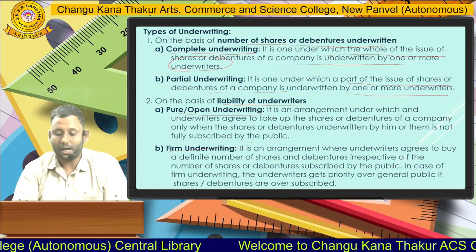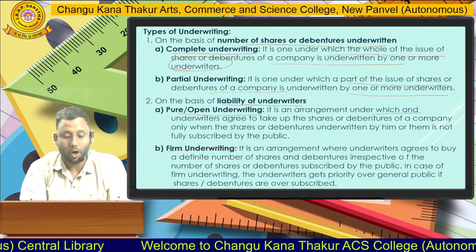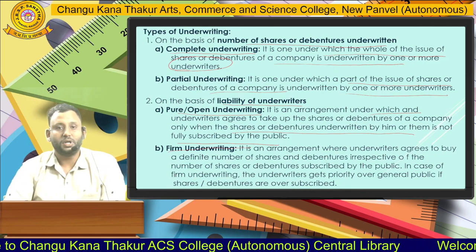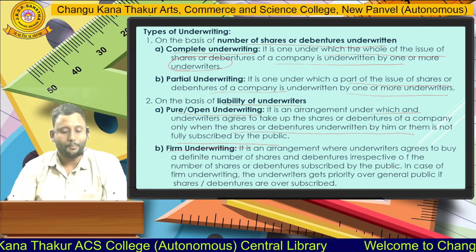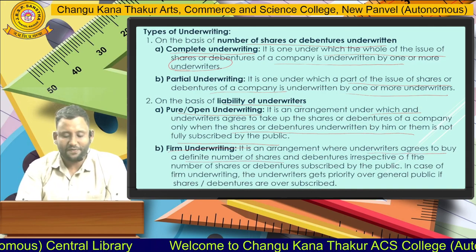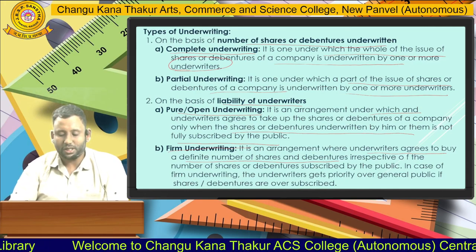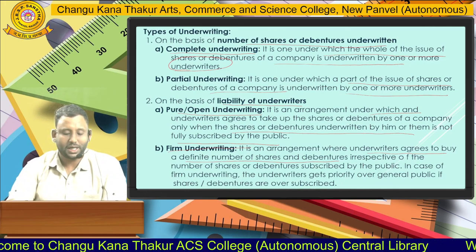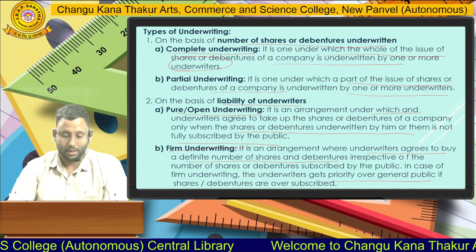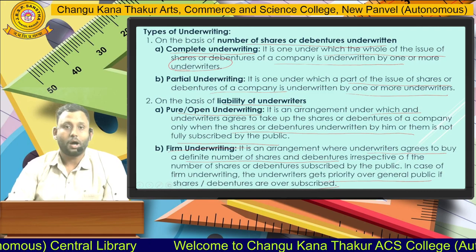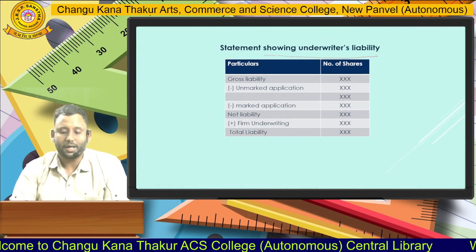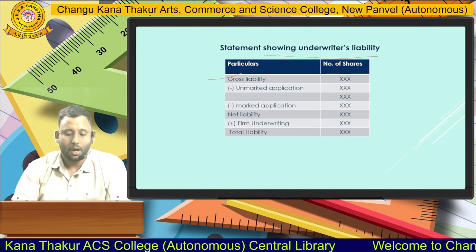Next, on the basis of liability of underwriters, there is pure or open underwriting and firm underwriting. Pure or open underwriting is an arrangement under which an underwriter agrees to take up the shares or debentures only when the shares or debentures underwritten by them are not fully subscribed by the public — the remaining balance shares will be purchased by the underwriter. Firm underwriting is an arrangement where the underwriter agrees to buy a definite number of shares and debentures irrespective of the number subscribed by the public. In firm underwriting, the underwriter gets priority over the general public if shares and debentures are oversubscribed.